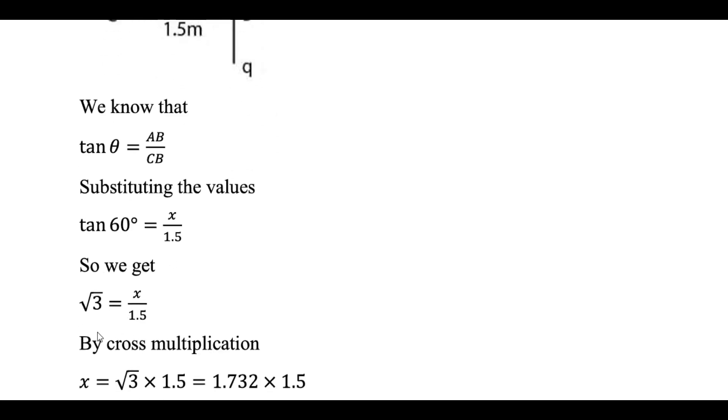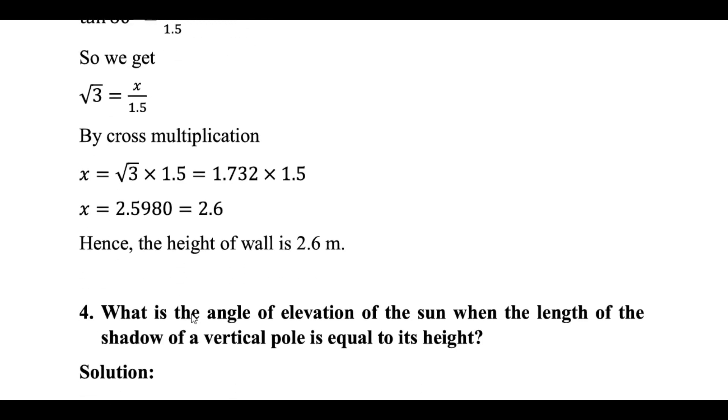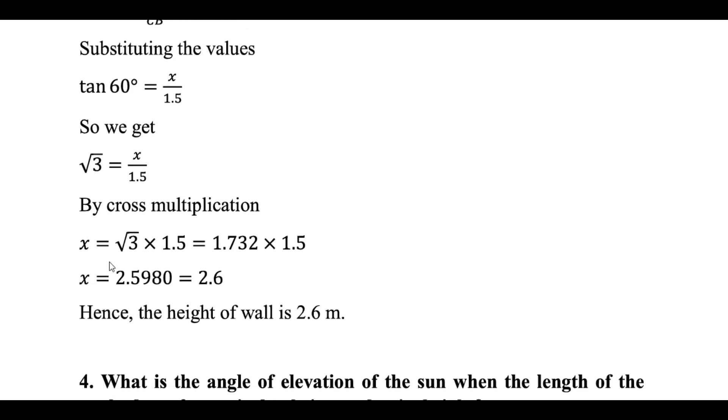Tan 60 degrees is equal to root 3 is equal to x divided by 1.5. By cross multiplication you will get the value of x that comes to 2.6 meters.